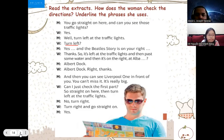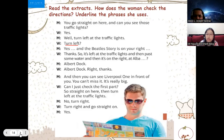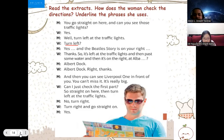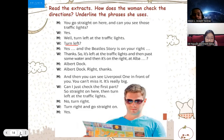Okay, let's get started. You go straight on here — can you see those traffic lights? Yes, I can see the traffic lights. Well, turn left at the traffic lights. Turn left, yes, and the building is on your right. So it's left at the traffic light, then pass some water, and then it's on the right at Alba Dock. Great thanks, and then you can see Liverpool One in front of you — you can't miss it, it's really big.